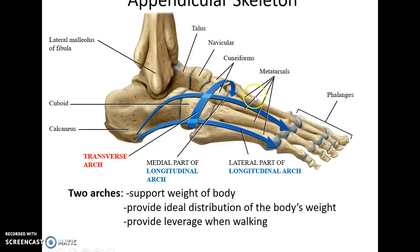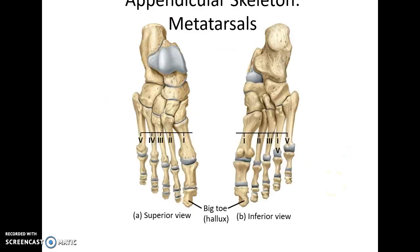After that come the metatarsals. Between the tarsals and metatarsals you have the two arches of the foot — the transverse arch and the longitudinal arch. These arches help to support the weight of the body, provide ideal distribution of weight, and also provide leverage when we're walking. There are five metatarsals after the tarsals, named I through V using Roman numerals, with one starting on the side where the great toe is.